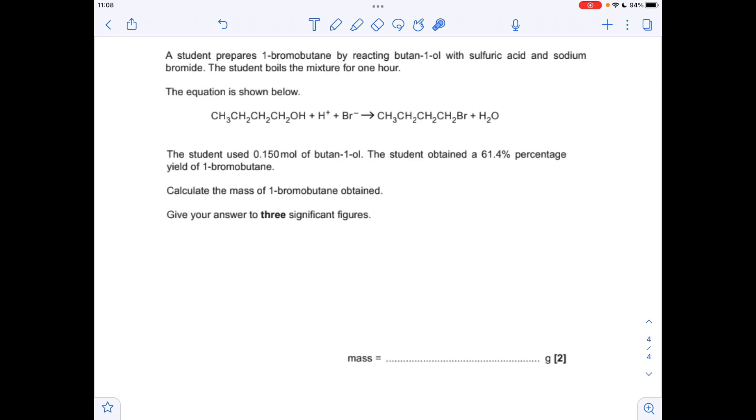Moving on to the percentage yield question, we're told that the students use 0.15 moles of butane-1-ol, and it's a 61.4 percentage yield of this 1-bromobutane. So the first thing we're going to do is work out how many moles of 1-bromobutane must have been formed. Obviously because of that 1-to-1 ratio, we'd expect that many moles of product to form, but we're only going to get 61.4% of that.